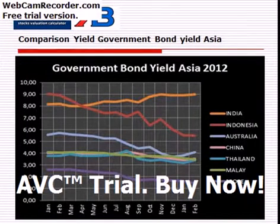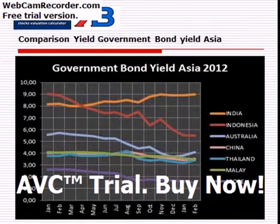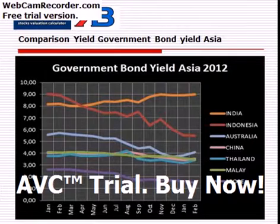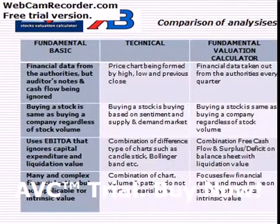Comparing the Indonesian government bond yield with other countries in the region, Indonesia placed second highest after India. The rest — countries like China, Thailand, Malaysia, Australia, and Singapore — are all below 5% rate.